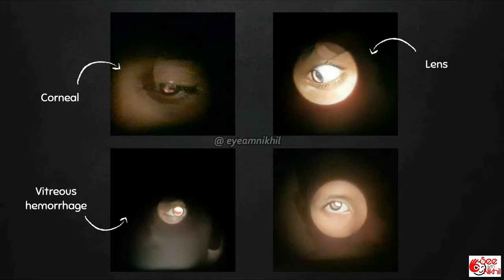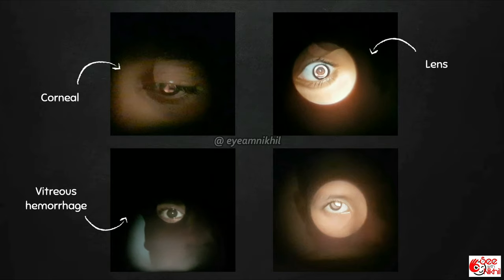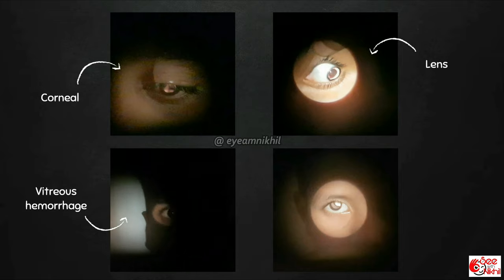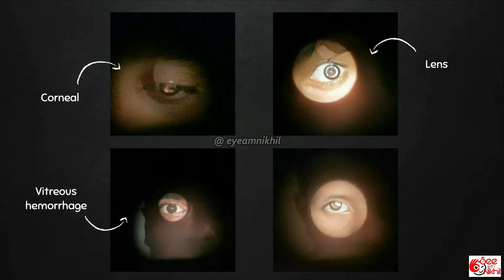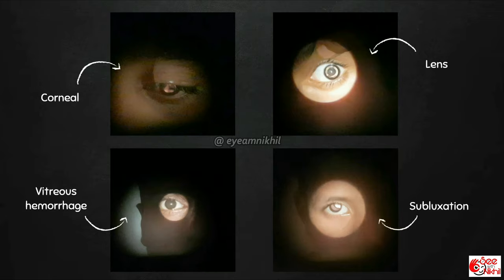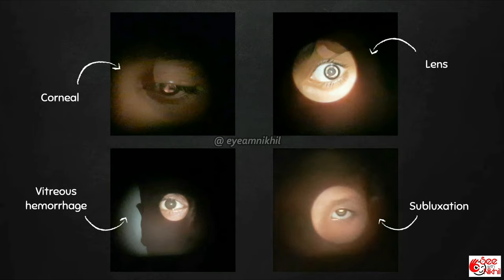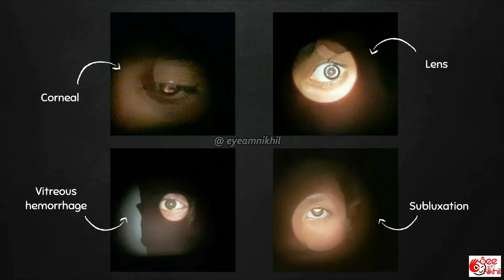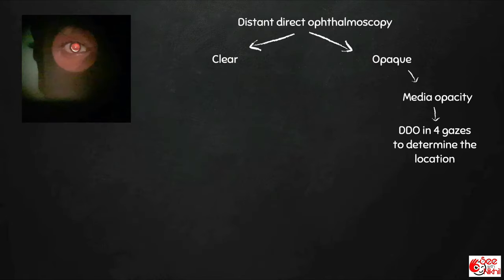Sometimes there will be total absence of glow even on different gazes, as in the right eye of this patient — seen in vitreous hemorrhage and mature senile cataracts. In a case of bilateral superior subluxation of lens, a crescent shadow is present. Distant direct ophthalmoscopy is said to be the best test for subluxated lenses. If the media is clear and yet there is decrease of vision, then a pinhole test should be performed.